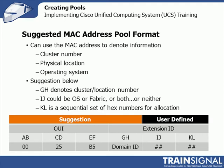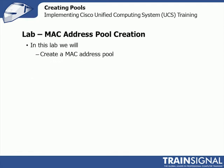Each field is a two-character field, so you don't have to dedicate an entire field to domain ID — the first character could be domain ID and the second could be fabric or OS. Often we'll do UCS cluster domain ID and operating system, then leave the last digits for sequential hex. Now let's jump back to UCSPE to go through creating a MAC address pool and talk more about naming schemes.